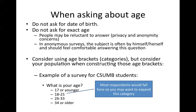If you're interviewing CSUMB students, you'll find most of them fall in the 18 to 25 range since it's a college campus — though we do have an older student population. What you could do is consider expanding that range into more specific sub-categories, like 18 to 20, 21 to 23, and 24 to 25, making more categories so you can do more with the information.